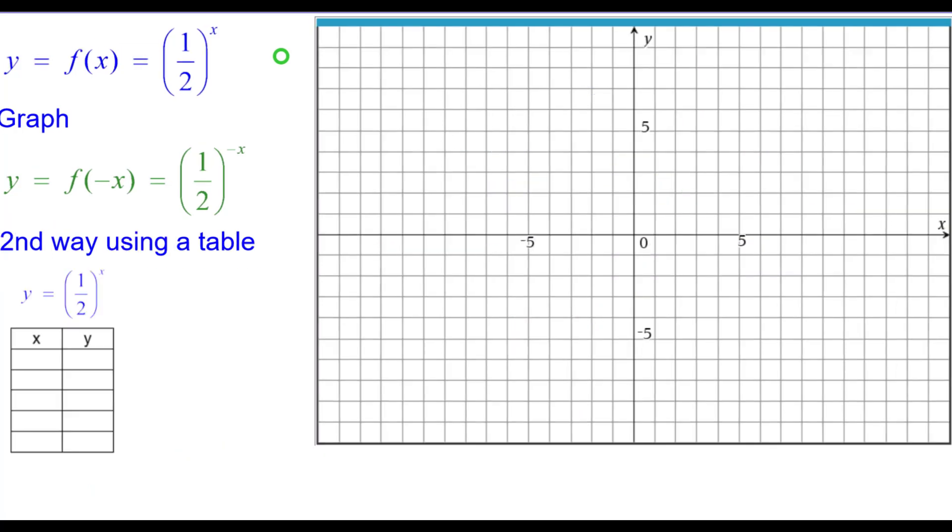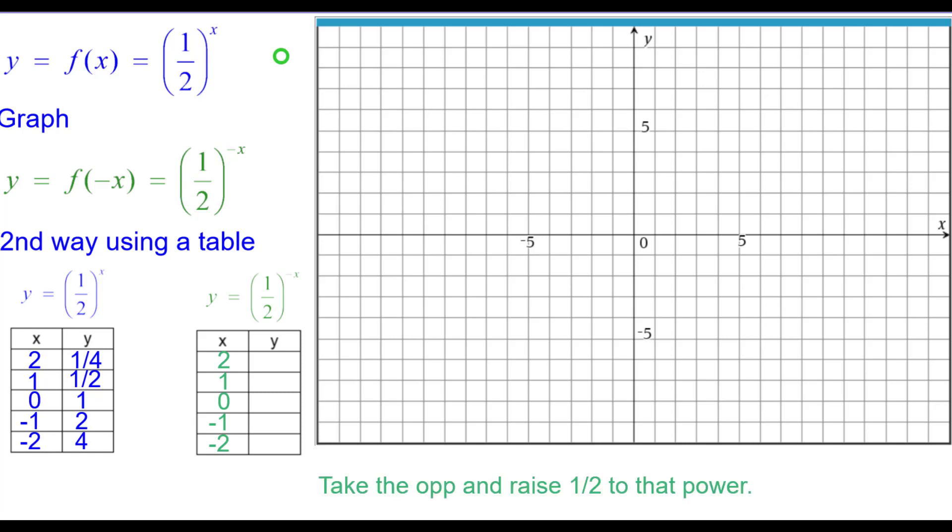Second way using a table. Here are five values for y equals 1 half raised to the x. Keeping the x values the same. Remember, we're going to take the opposite of those x values and then raise 1 half to that power. That's what the equation says.